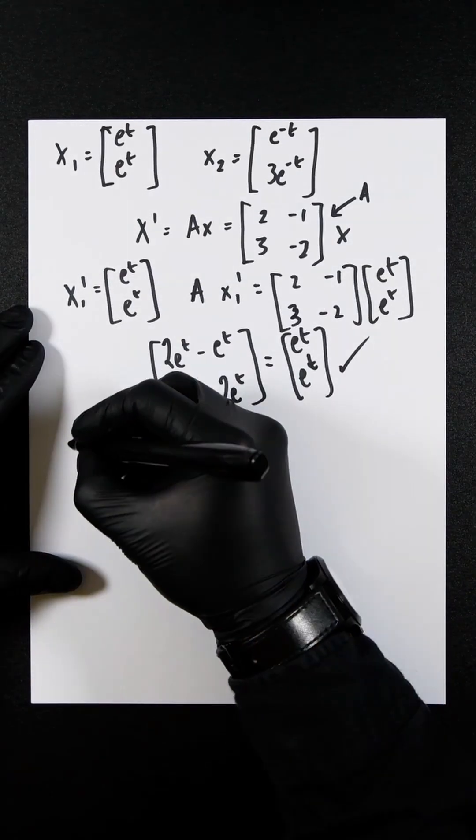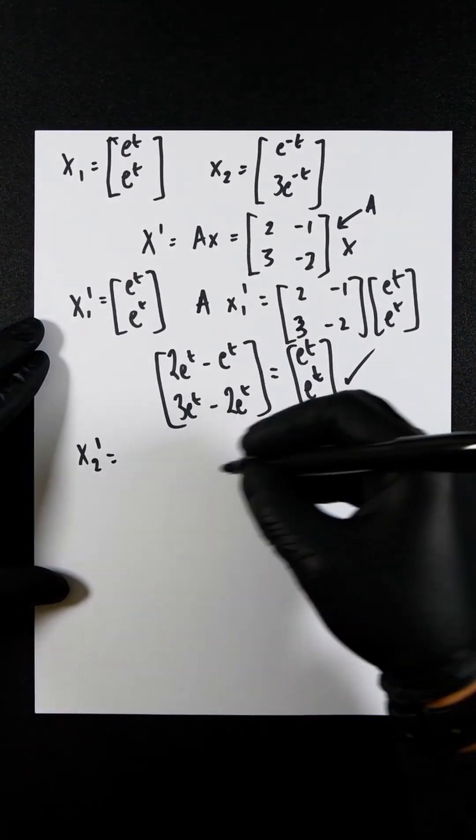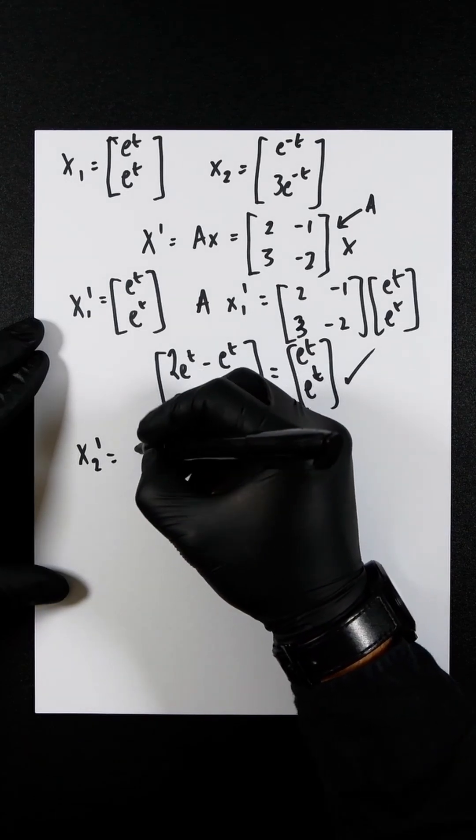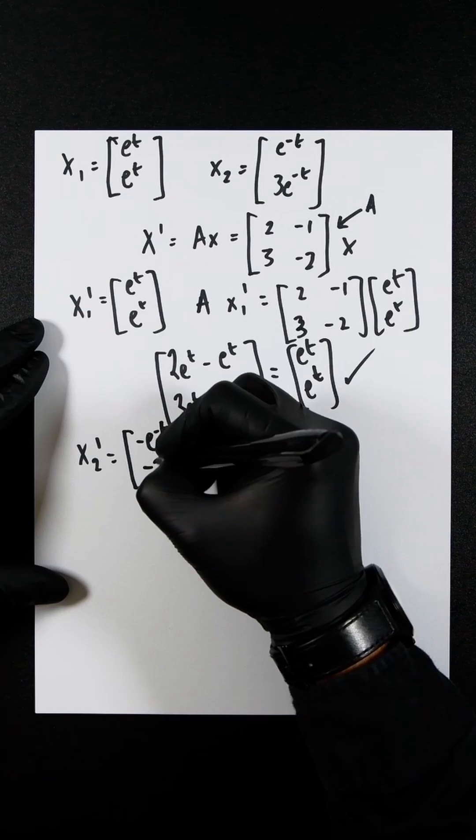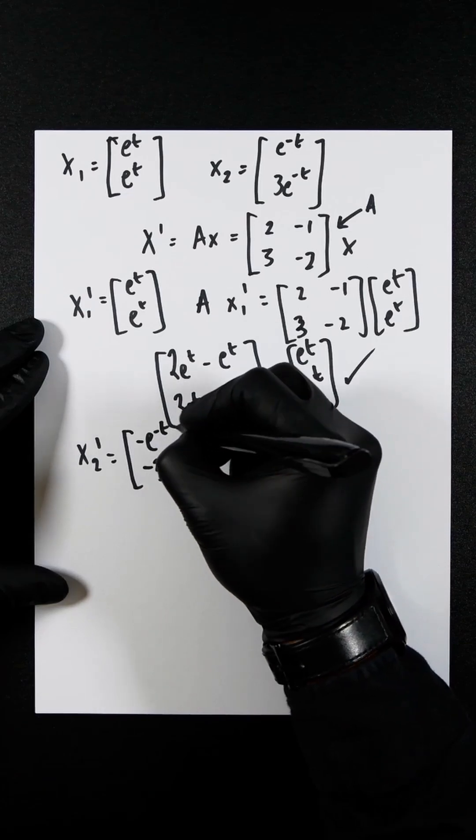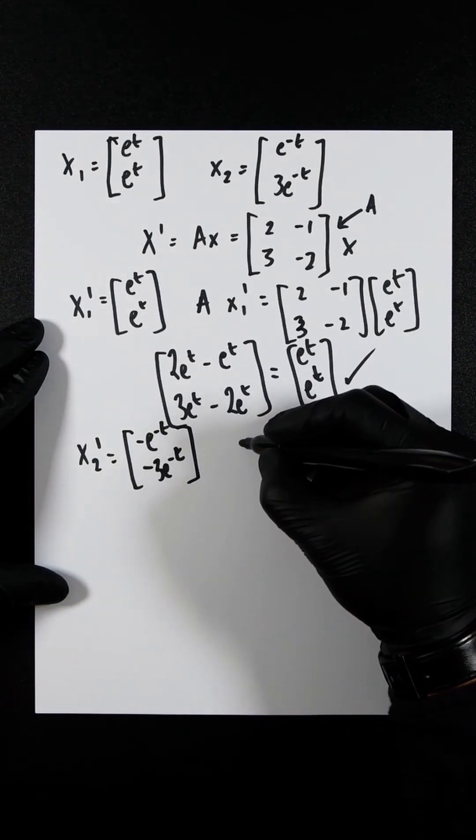Let's now do the same for this. So let's differentiate this once. You're going to get minus e to the minus t, minus 3e to the minus t. And then we do the same again.